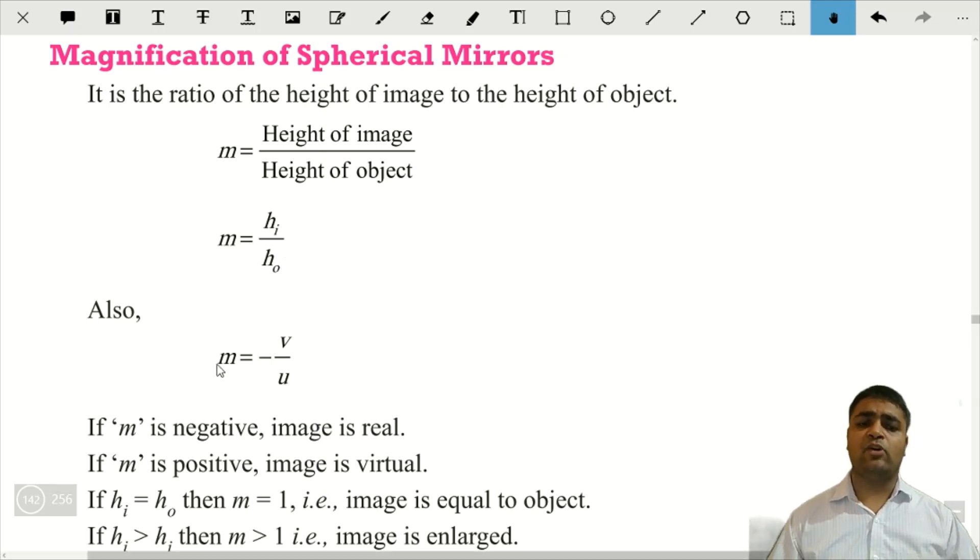Magnification ko hum ek aur formula se nikaal sakti hai. That is m = -v/u. v is the image distance and u is the object distance from the pole.